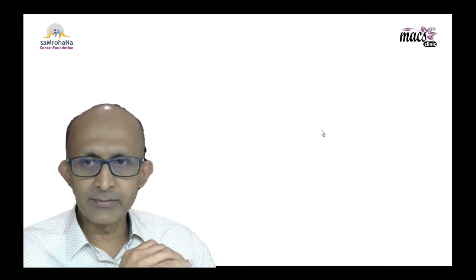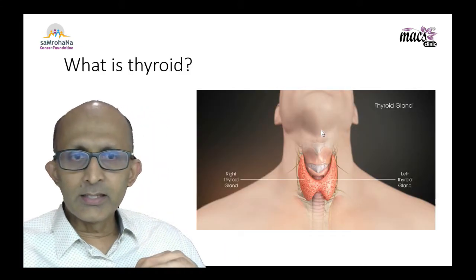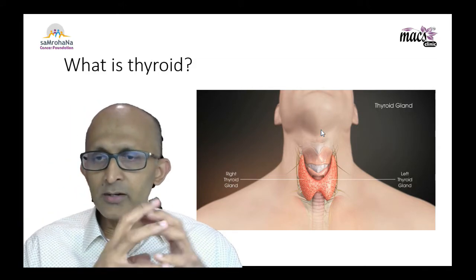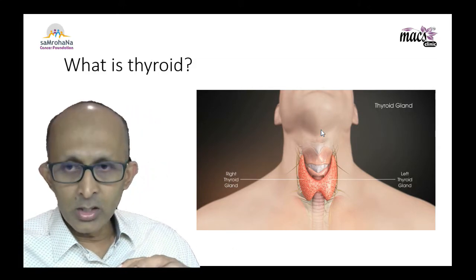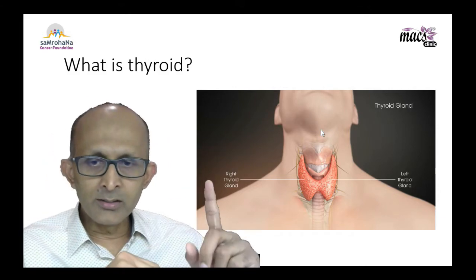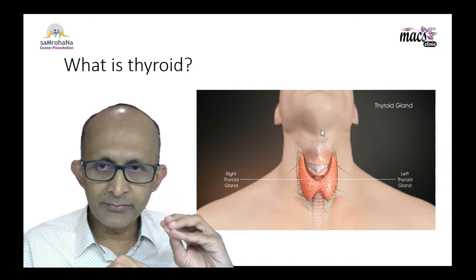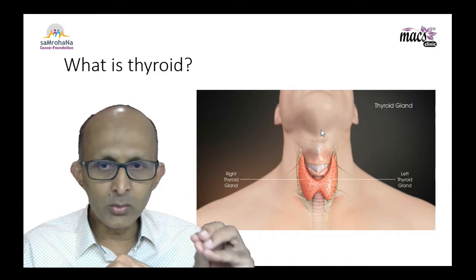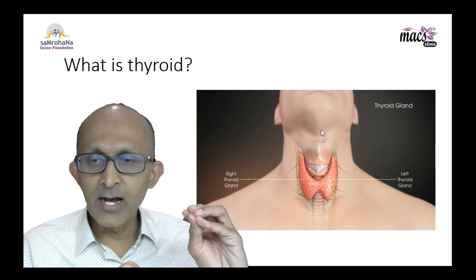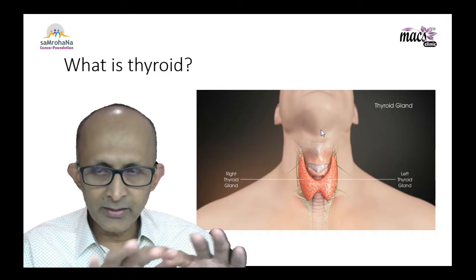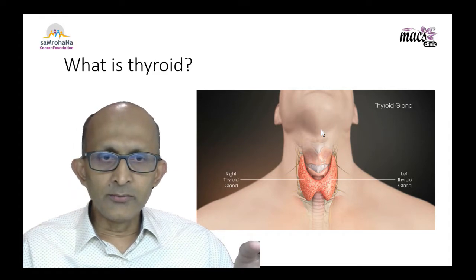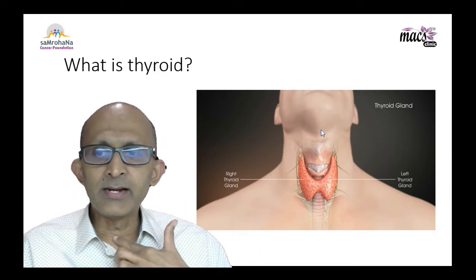Samrohana is a cancer foundation associated with a lot of charitable activities. Thyroid, as you know, is what is called an endocrine organ, which means it is an organ or gland associated with secretion. Its job is to produce something called a hormone, which is required for the functioning of the body. This gland is situated right in front of the neck.